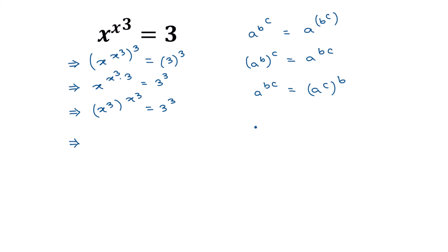Applying the formula: when a to the power a is equal to b to the power b, then we can conclude a is equal to b. Comparing both sides, x cube corresponds to 3, so we get x cube is equal to 3.